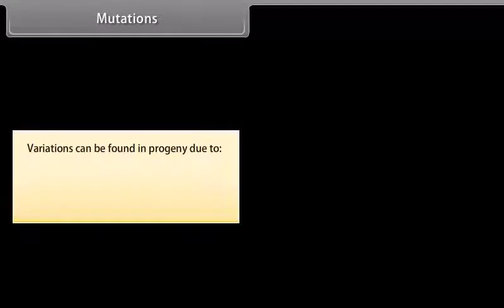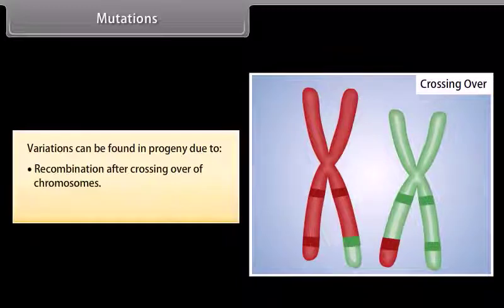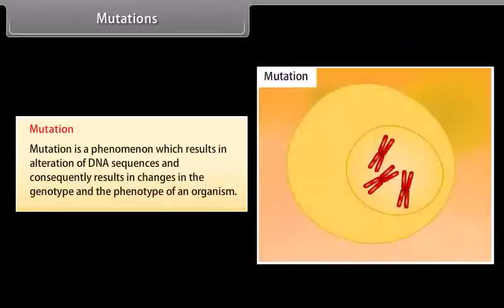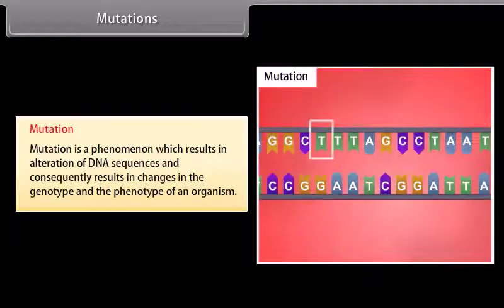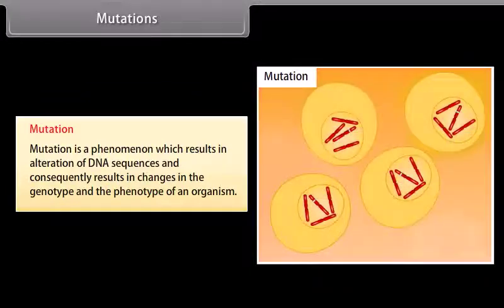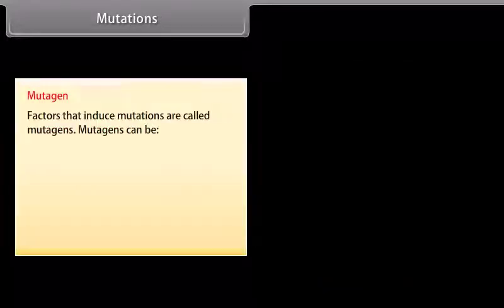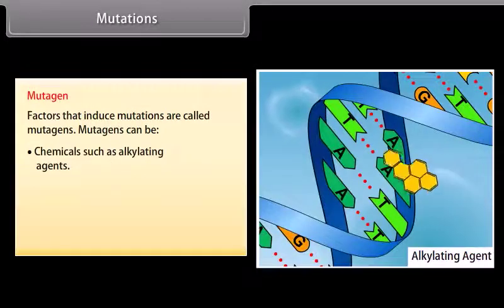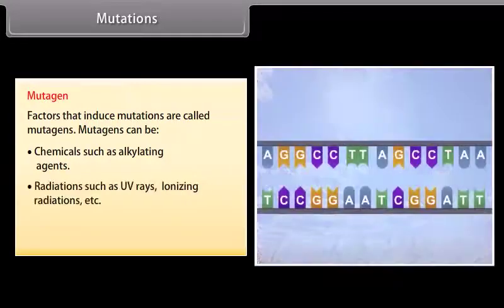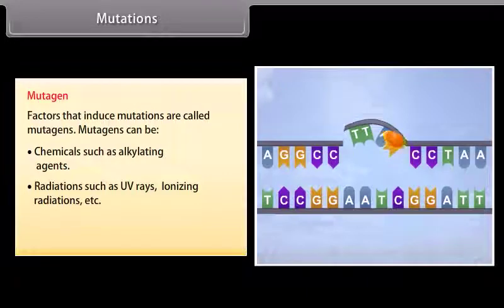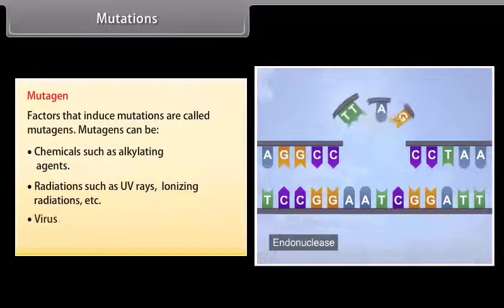Mutations. Variations can be found in progeny due to: 1. Recombinations after crossing over of chromosomes, and 2. Mutations. Mutation is a phenomenon which results in alteration of DNA sequences and consequently results in changes in the genotype and the phenotype of an organism. Mutagens are factors that induce mutations. Mutagens can be chemicals such as alkylating agents, radiations such as UV rays, ionizing radiations, viruses, and physical agents.